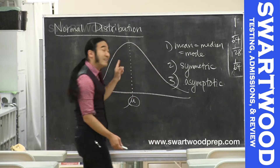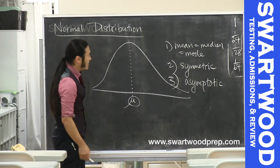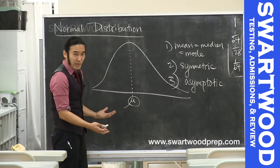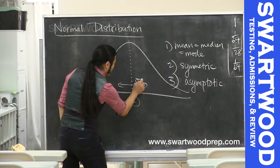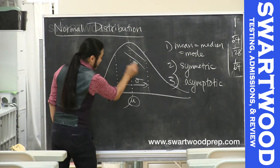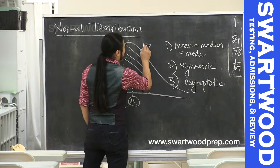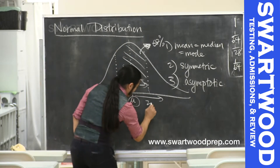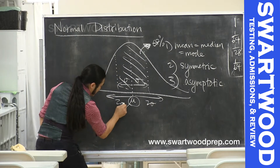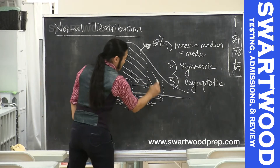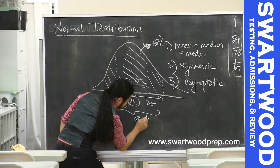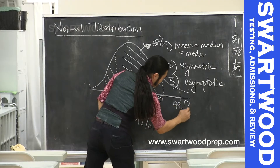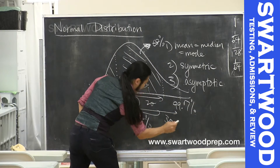The normal distribution models a lot of things really well. These distributions have different means and different standard deviations, but they all share the property that going one standard deviation to the right or left of the mean captures about 68% of the curve. Going out two standard deviations captures about 95%, and going out three standard deviations gets you about 99.7%.